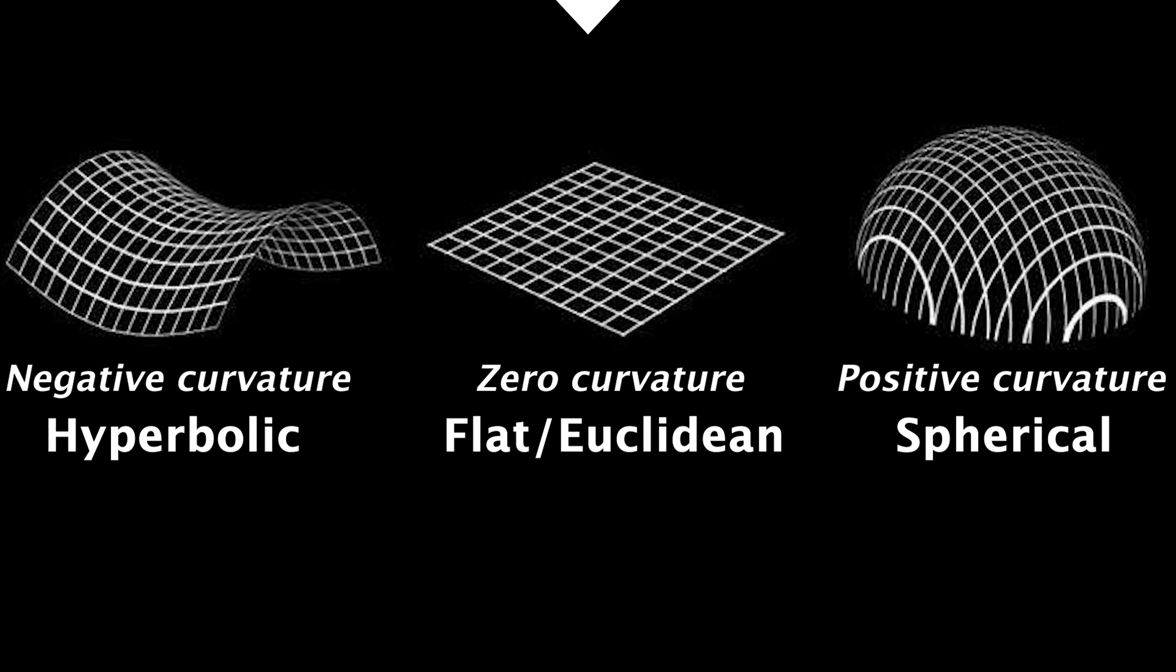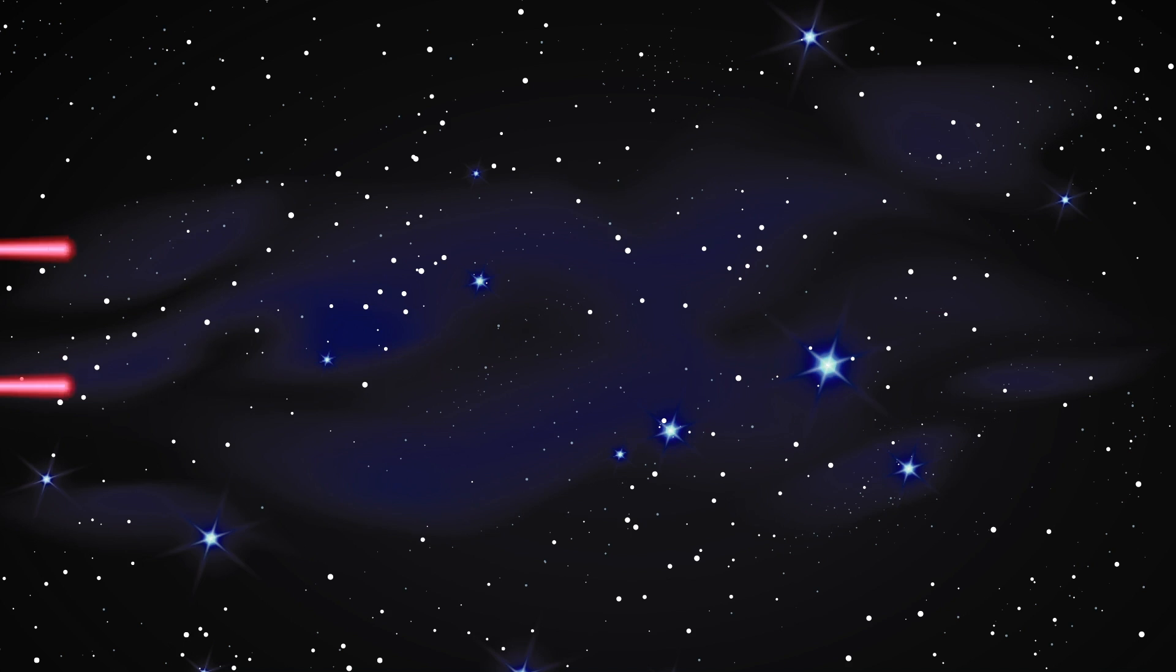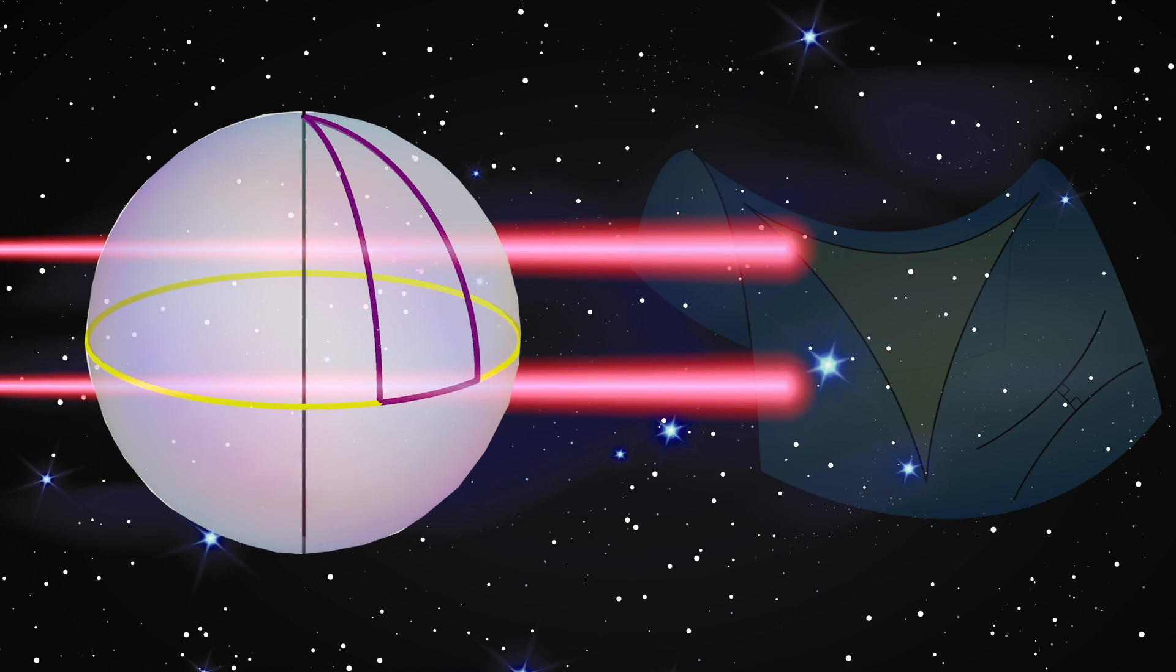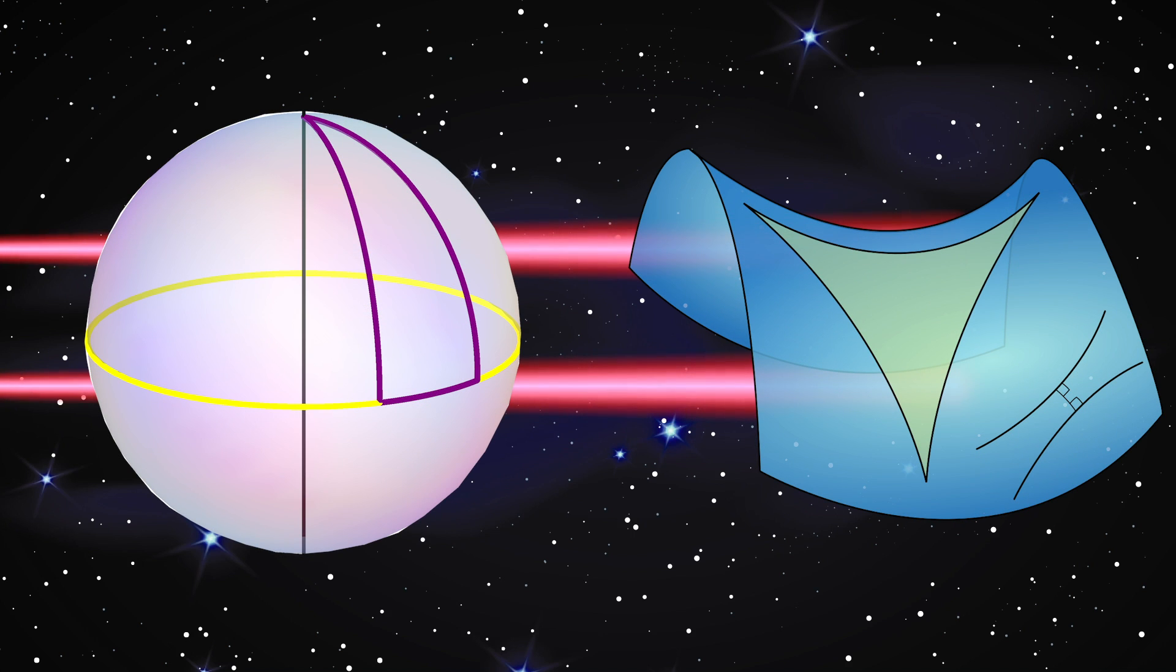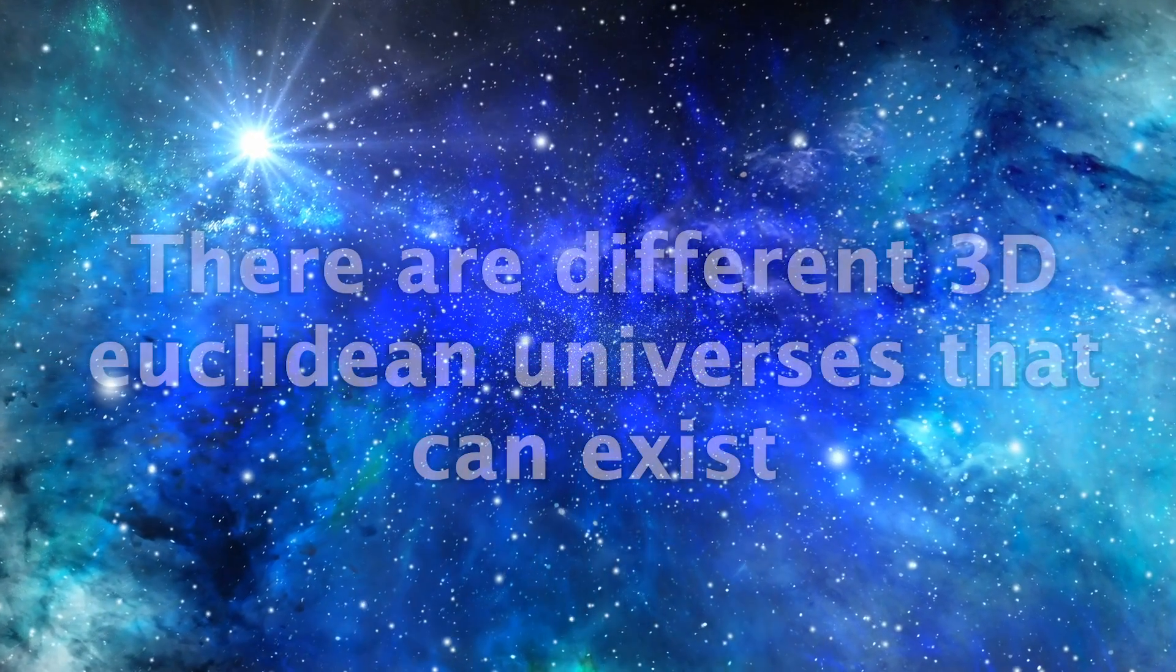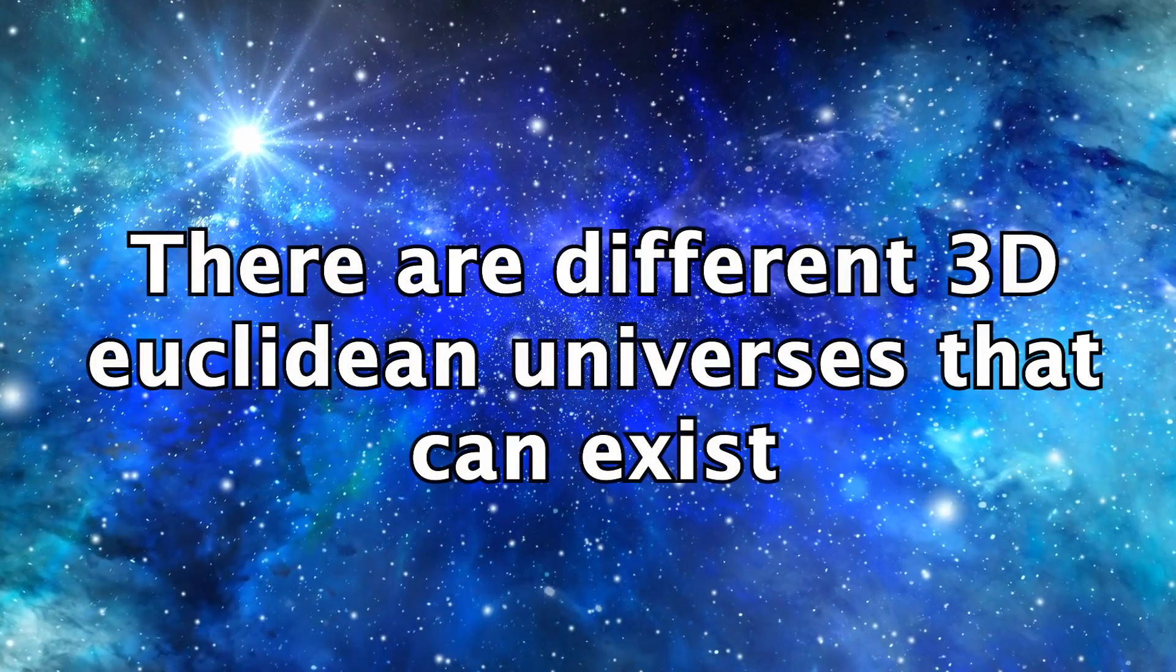Now, of these three, we believe the universe is flat. As in, there's no higher dimensional curvature, and parallel beams of light will stay parallel, as opposed to converging or diverging, which they would in a spherical or hyperbolic universe, respectively. But the thing is, there are different Euclidean universes that can exist, all with three spatial dimensions.